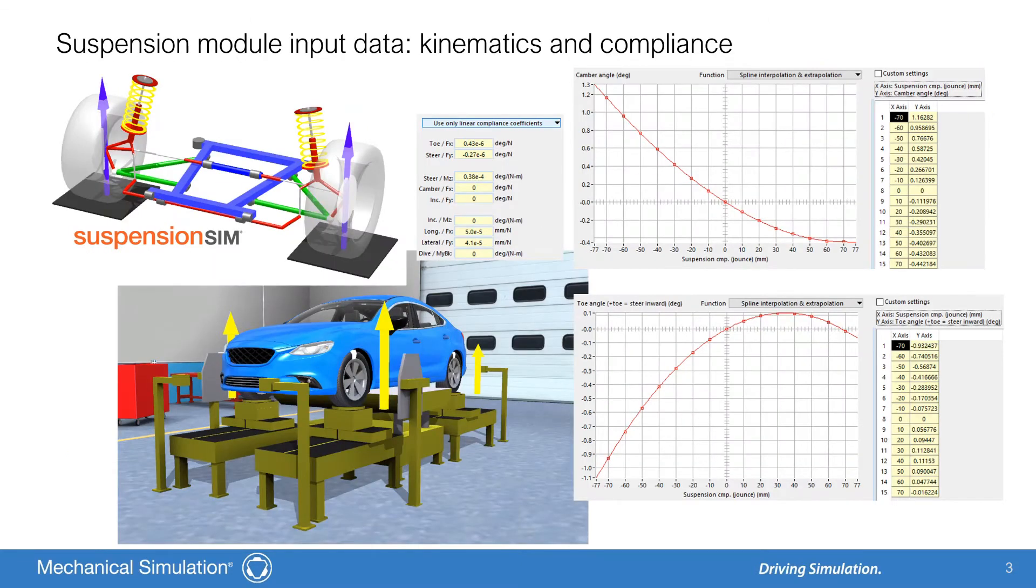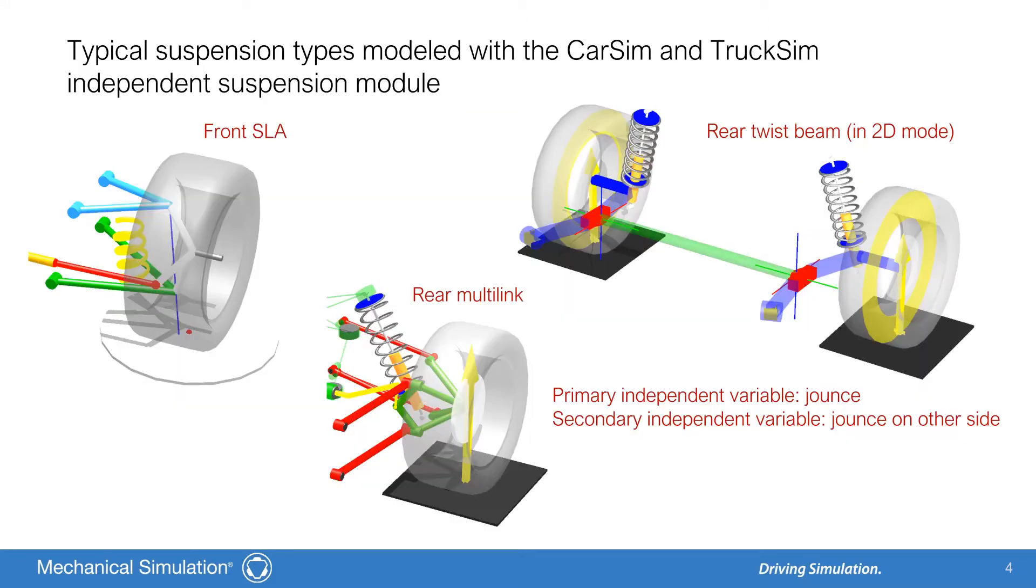The suspension modules are parametric in that they have been designed to accept familiar kinematic and compliance properties as input. These are the kinds of measurements you can get on a K&C rig or from a multibody modeling tool like SuspensionSim or Adams. Compliance data for the various suspension modules are similar. The main difference is how the wheel or axle is constrained relative to the sprung mass.